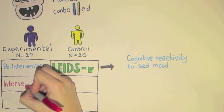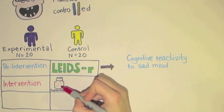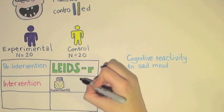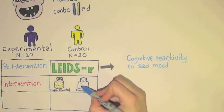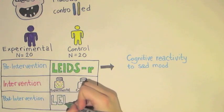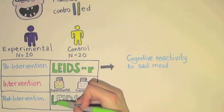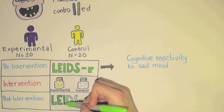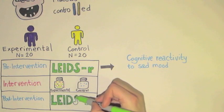In the intervention phase, the experimental group received the probiotic mixture, Ecologic Barrier, and the control group received the placebo. After four weeks of taking this supplement, all participants again completed the revised Leiden Index of Depression Sensitivity questionnaire in the post-intervention phase.